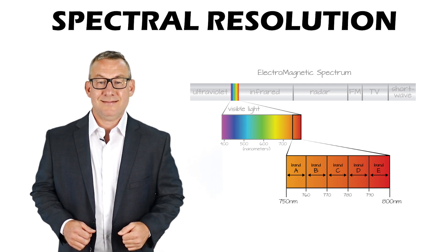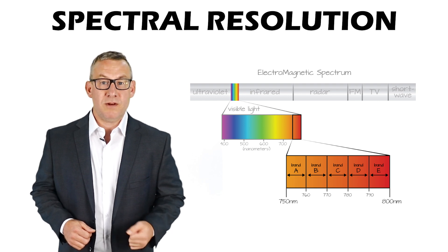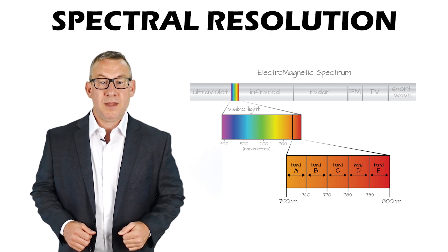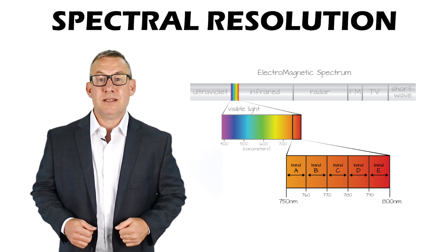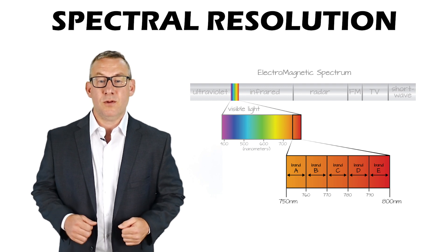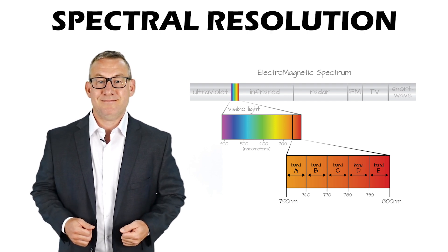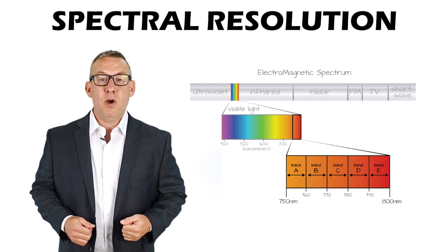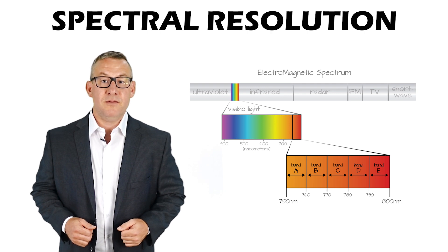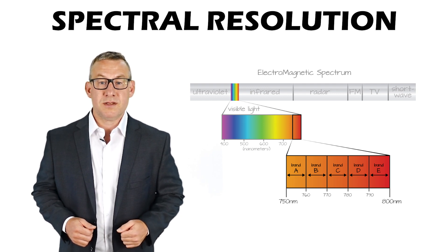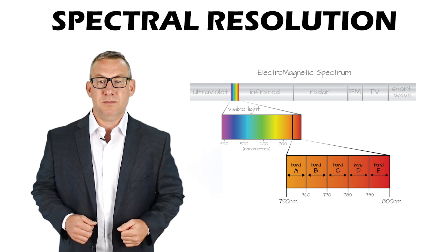Spectral resolution is the ability of a sensor to distinguish between wavelength intervals in the electromagnetic spectrum. Most remotely sensed data in GIS consists of measurements of visible light or infrared intervals of the electromagnetic spectrum.